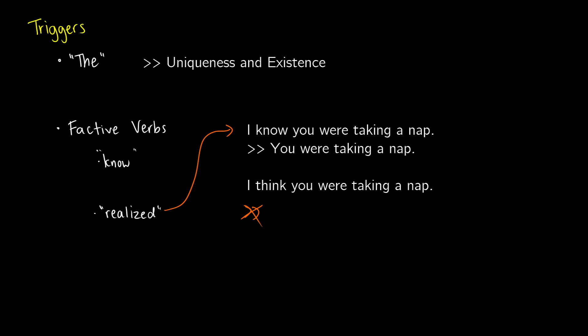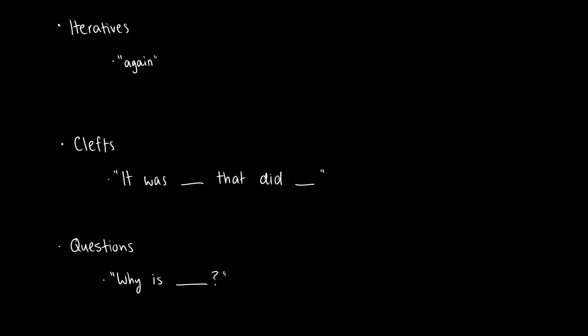Those are two types of triggers. We have three more triggers. One of them is the word 'again'. If I give you a sentence like 'He's sleeping on the couch again', whenever you say the word 'again', it presupposes that the event happened before.